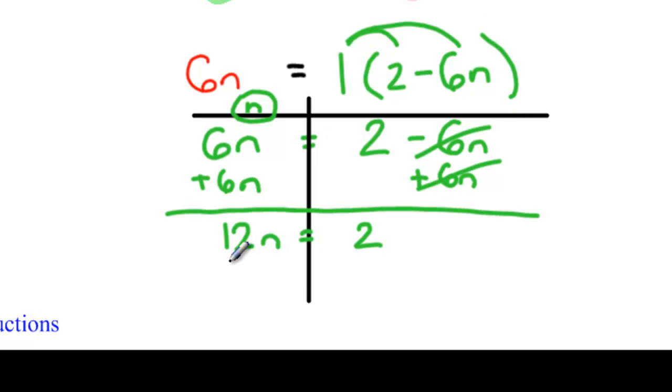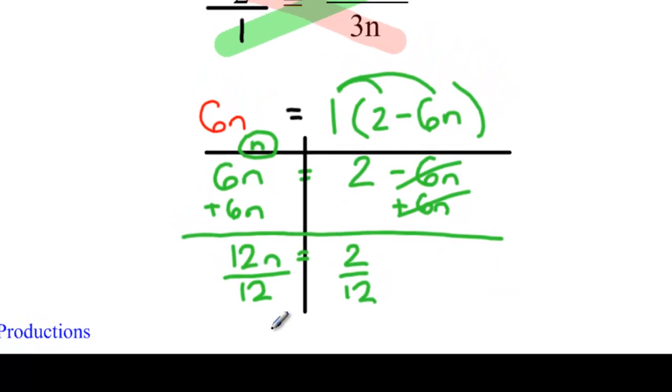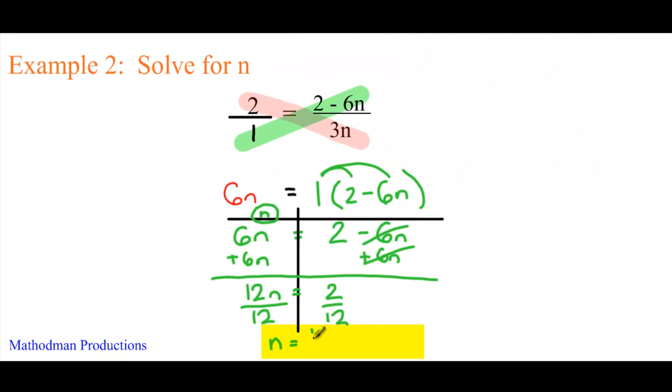How do I solve it from here? Just divide both sides by 12. And I end up getting n equals 1 sixth or 0.16 repeating.